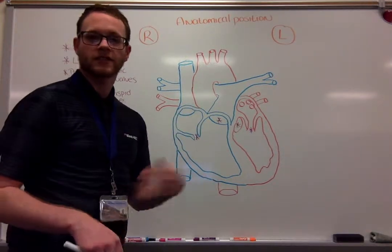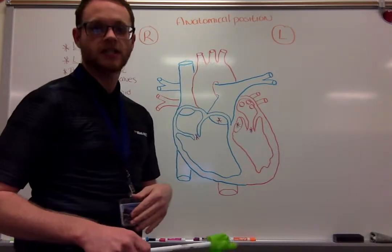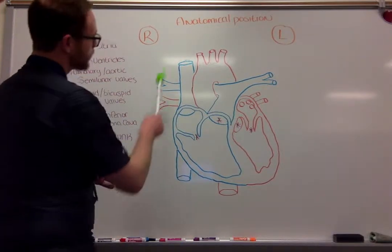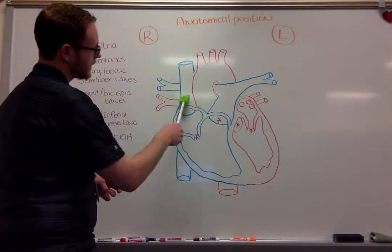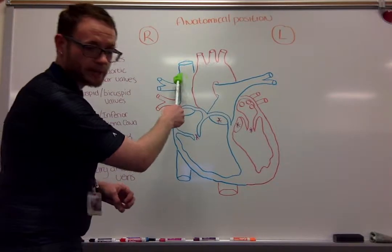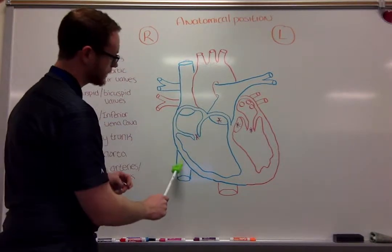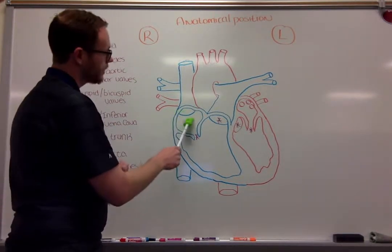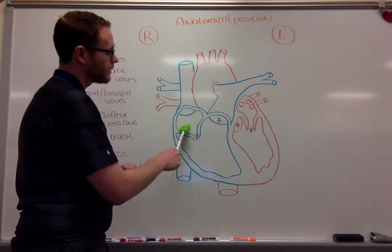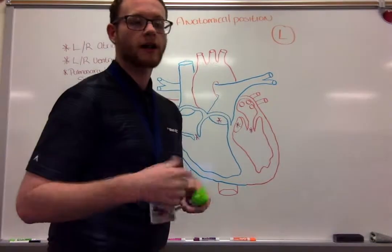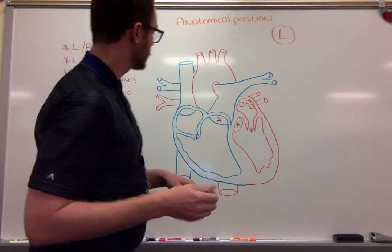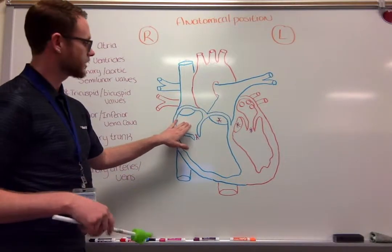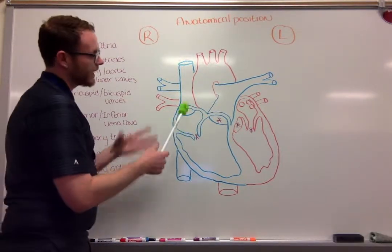It just dropped off all of its oxygen to its tissues and now it needs to get reoxygenated. Descending down the superior and ascending from the inferior vena cava, we pull our unoxygenated blood into the right atrium.